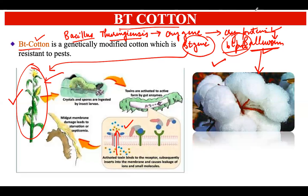That was the idea behind Bt cotton. Several other crops have been produced via this same concept, such as Bt corn, Bt tobacco, Bt brinjal, and many more. That was all about Bt cotton.